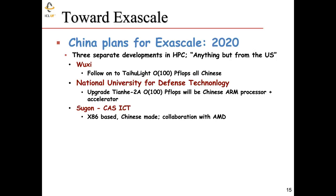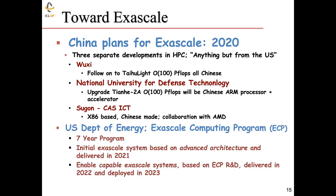In the U.S., there's an effort called the Exascale Computing Program, started last year — a seven-year program outlined by the Department of Energy. The initial machine at exascale will be based on some advanced architecture, intended to be in use by 2021. A second machine based on a capable exascale architecture will be delivered in 2022 with deployment in 2023.